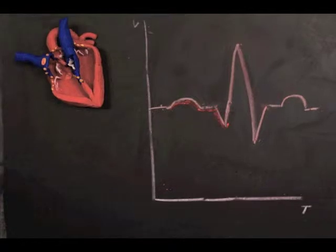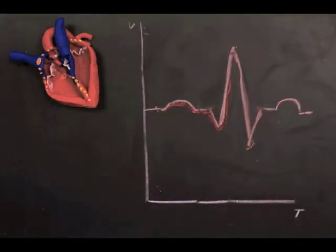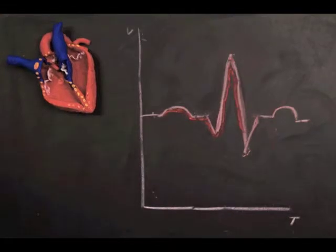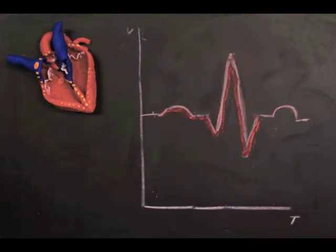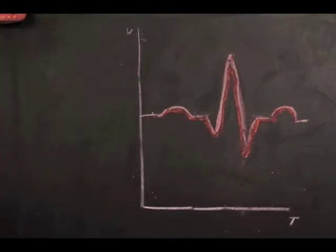The Q wave represents the spread of the current from the AV node down to the bundle of His and the R and S waves represents the spread of the current up the Purkinje fibers or ventricular depolarization. Ventricular repolarization is illustrated by the T wave.